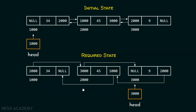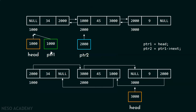Now in order to obtain this state, we have to perform certain procedures. First, we will keep two pointers, ptr1 and ptr2. ptr1 must point to the first node of the list, and ptr2 must point to the second node of the list. For this purpose, I will put the code: ptr1 equal to head, and ptr2 equal to ptr1 next.